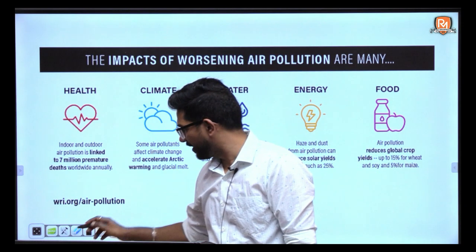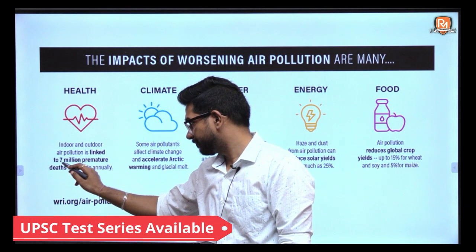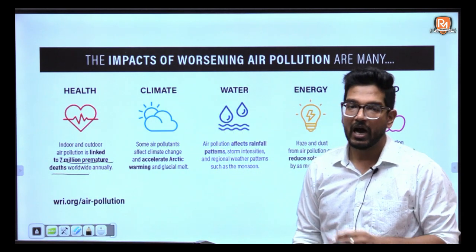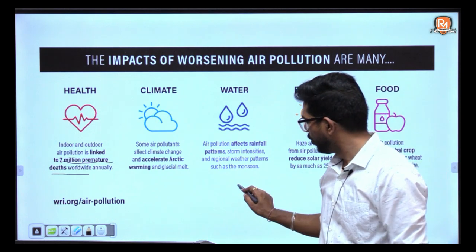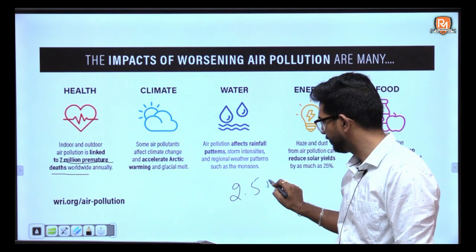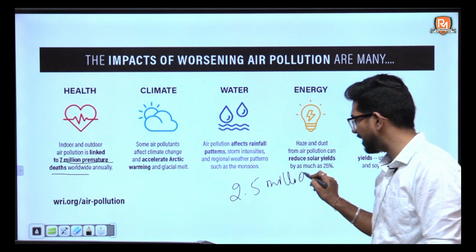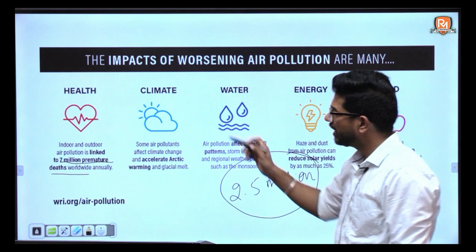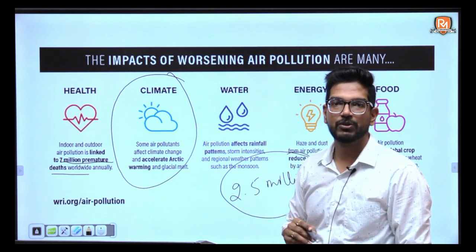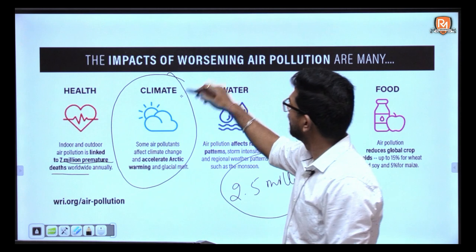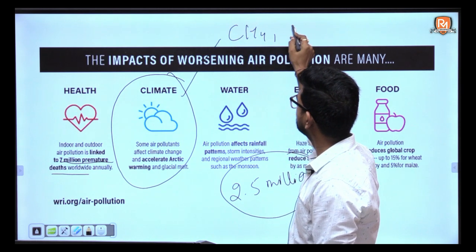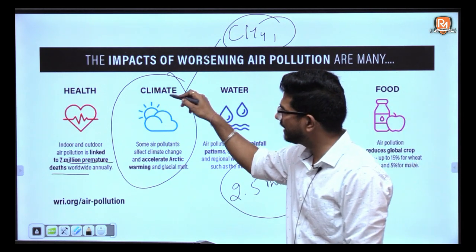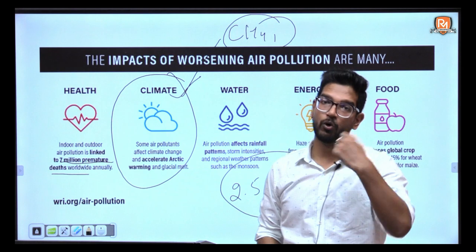According to various organizations, almost 7 million premature deaths worldwide annually are related to air pollution. According to WHO, almost 2.5 million people lose their lives just because of air pollution. It is also one of the major reasons for climate change, because a lot of toxic gases like methane cause global warming.